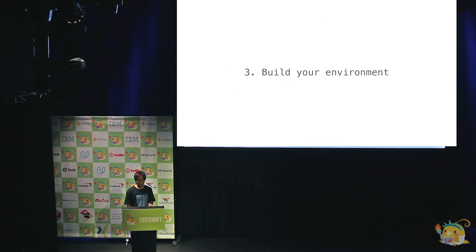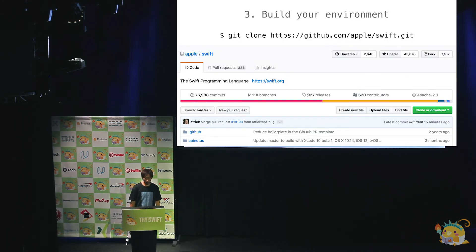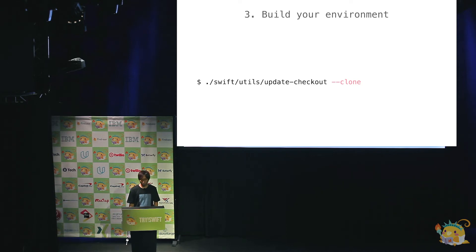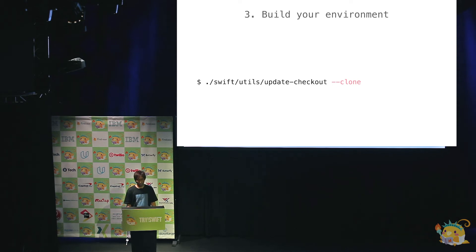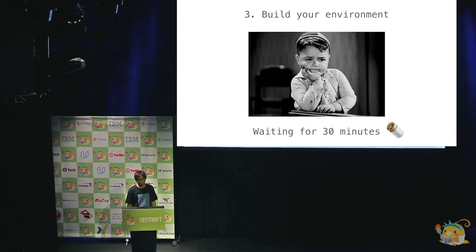As part of the proposal, I had to implement my idea — but first I needed to build Swift itself. To build Swift, you clone the Swift repo, which takes a few minutes. Then check out dependencies by running update-checkout with the clone option — all dependencies will be cloned, which also takes a few minutes. After that, build Swift by running the build script, which takes about 30 minutes. I recommend doing this at home or at the office.